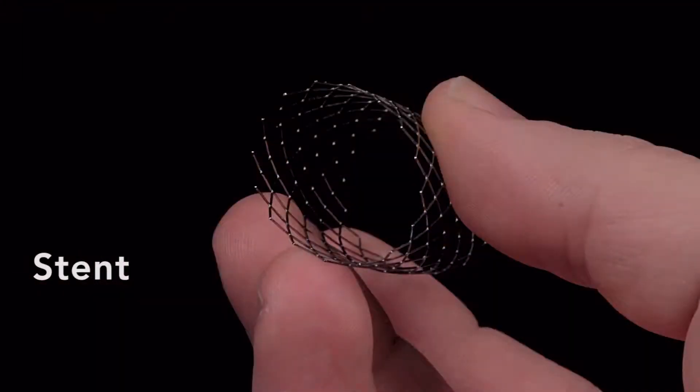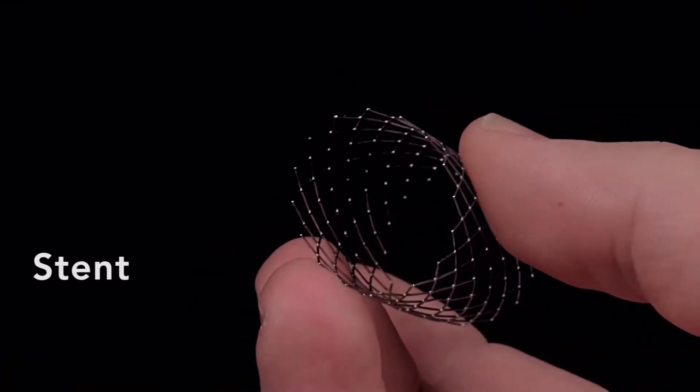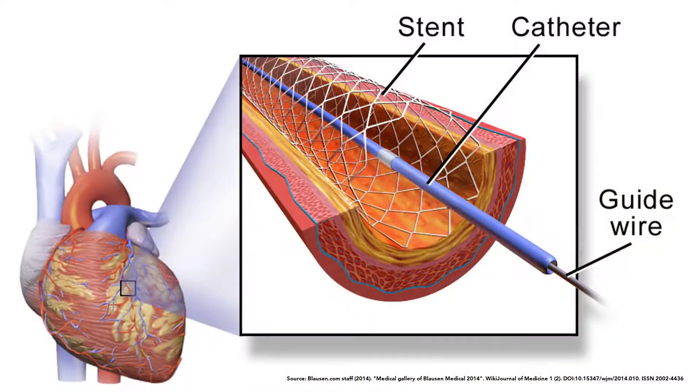Here's an example of a commercial device that uses super-elastic nitinol. It's a cage-like metal tube, called a stent, that's used by a cardiologist. The doctor inserts it into a vessel or duct—here it's shown in a coronary artery—and it holds the walls in place.